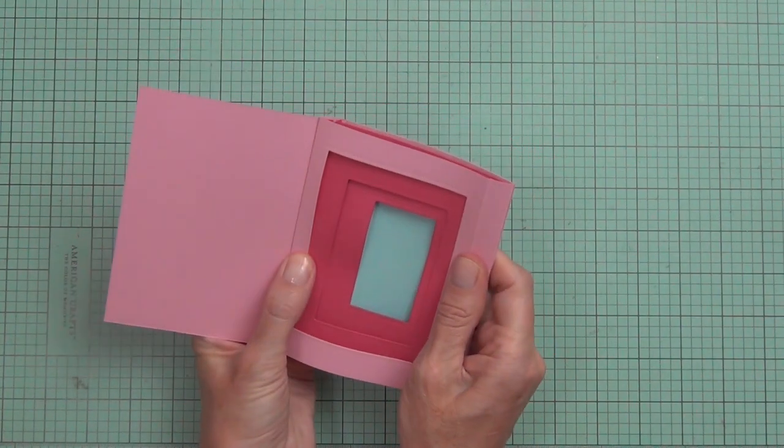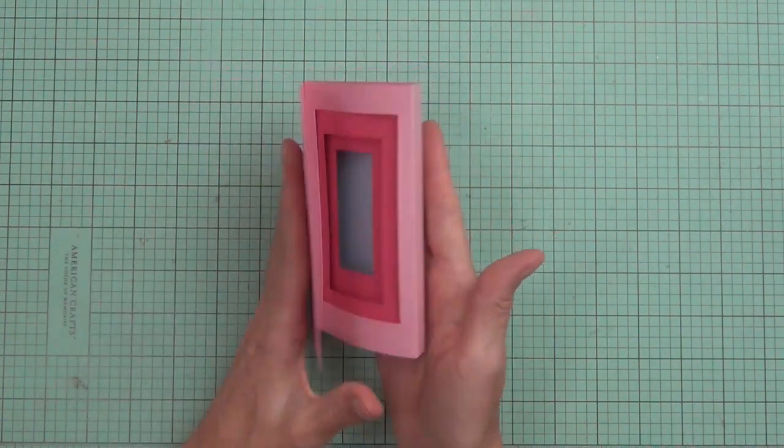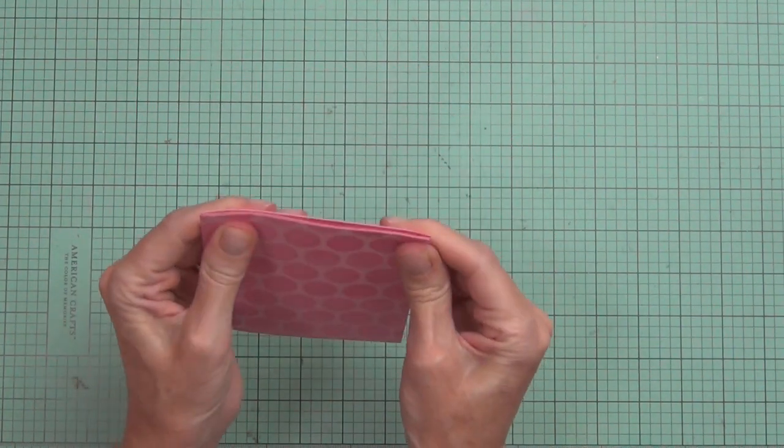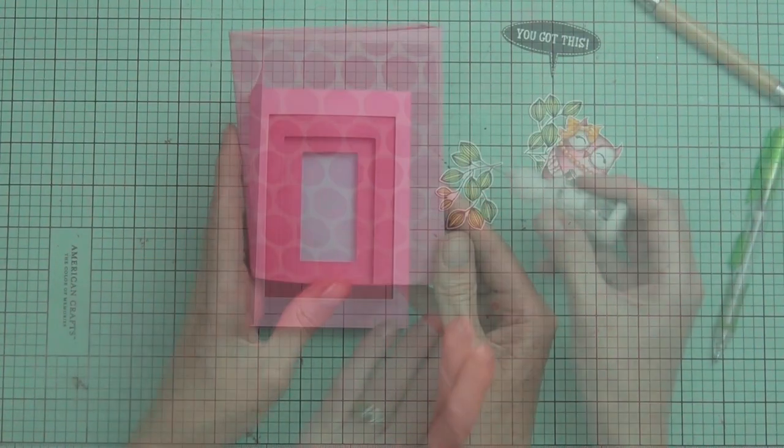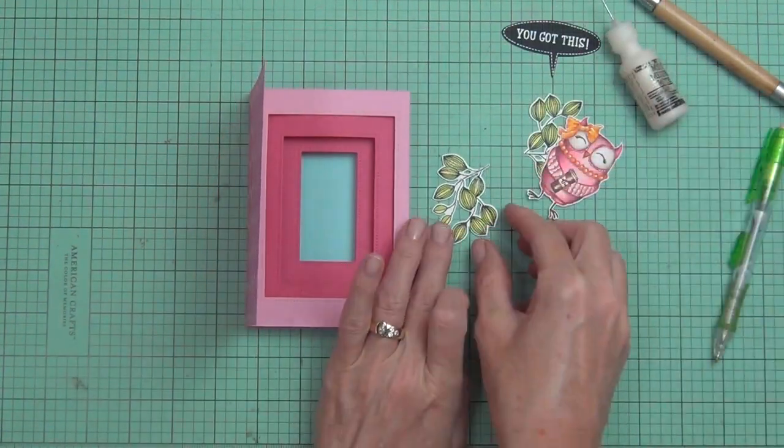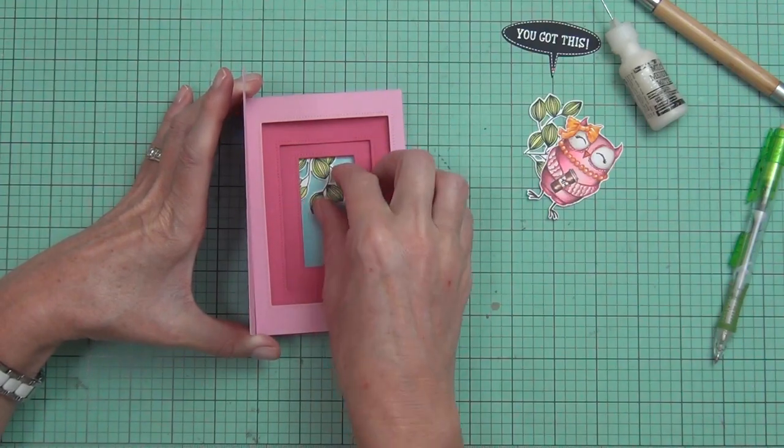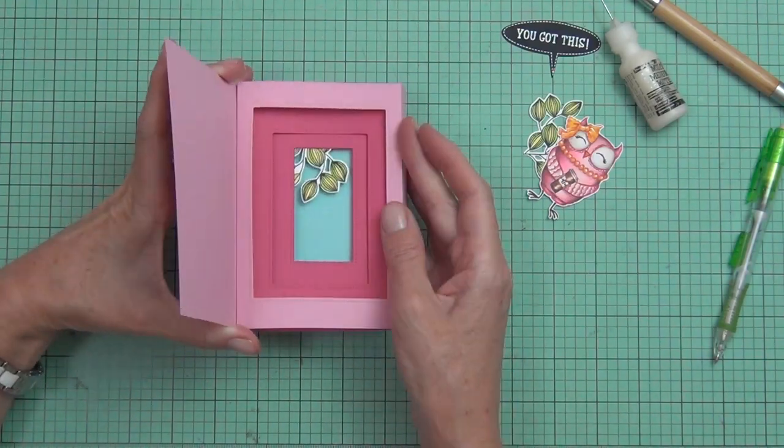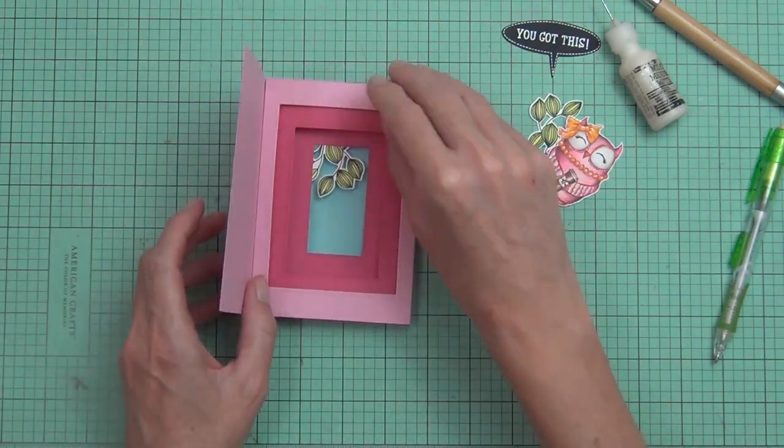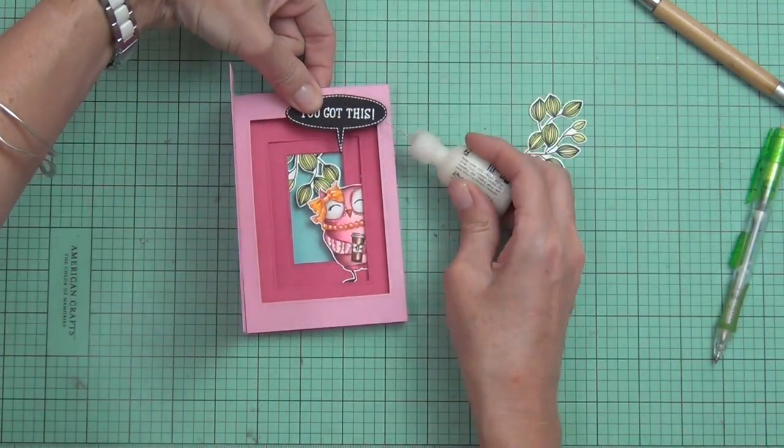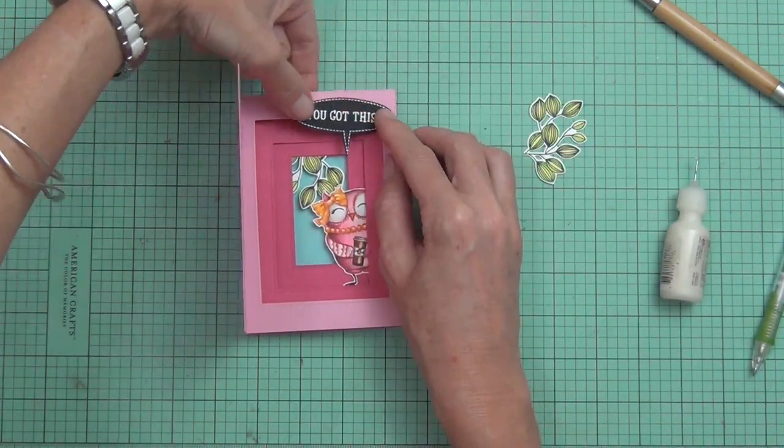I had already taken that piece aside and added, it's the bubble wrap stencil from Altenew, and used my blender pen and added some pink ink to that just to add some detail to the front. I thought it'd be fun. You could use some design paper, whatever you want, and then you can actually decorate it however you want.